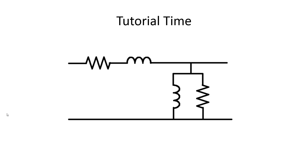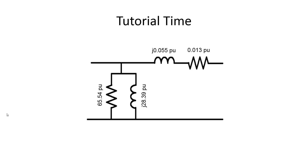Let me draw the circuit again. What's missing? The ideal transformer is missing because in per unit it disappears. Both circuit models are equally accurate. Sometimes I prefer to use one, sometimes the other — and I will use the simplified one right now in the next part.